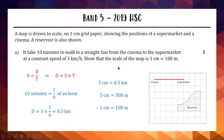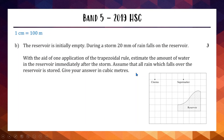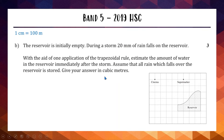Be careful with 'show that' questions — you need full working to convince your marker you understand. Show as much working as you can. For Part B, worth three marks: the reservoir starts empty and 20 mm of rain falls on it. We use the trapezoidal rule to estimate how much water falls in, with all rain stored. We need to find the area of the reservoir first, then multiply by the depth of rain to get volume.